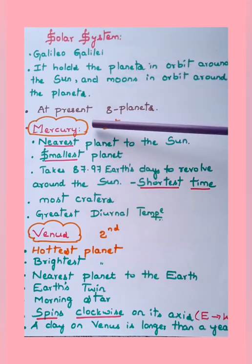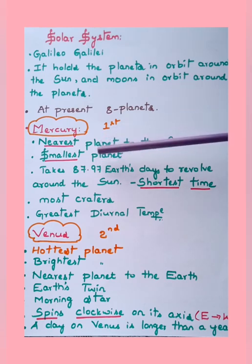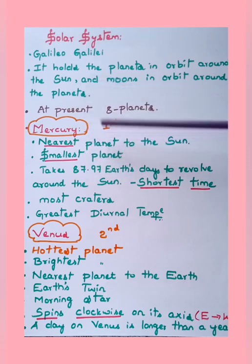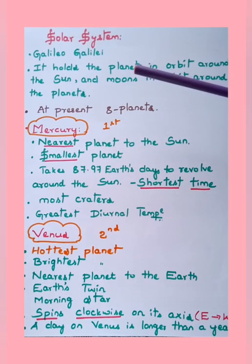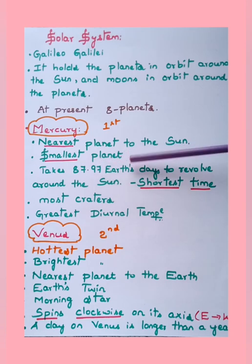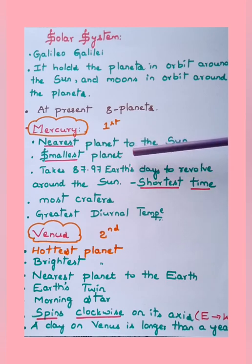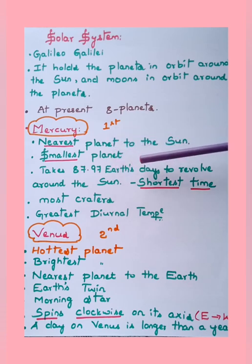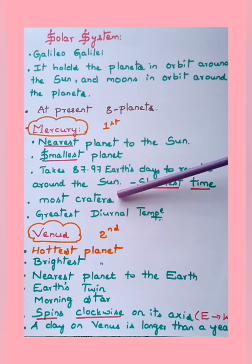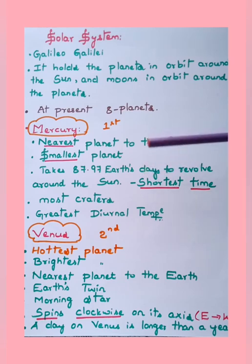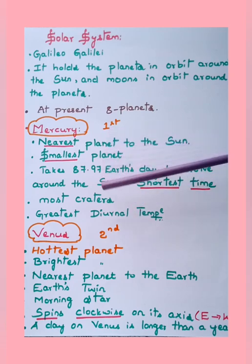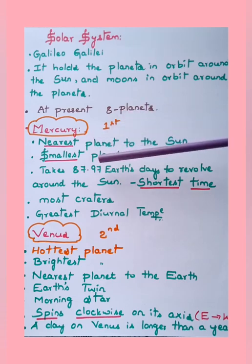Mercury is the first planet in the solar system, the nearest planet to the sun, and the smallest planet in the solar system. It takes around 87.97 earth days to revolve around the sun — the shortest time taken by any planet to revolve around the sun. Mercury also has the most craters and the greatest diurnal temperature variation, meaning extreme temperature highs and lows can be experienced in the same day.